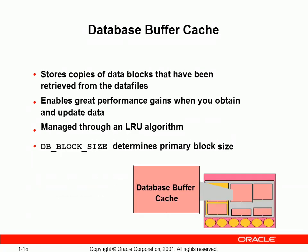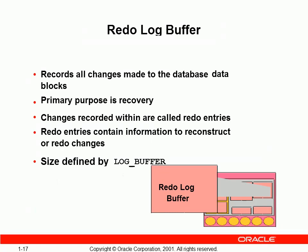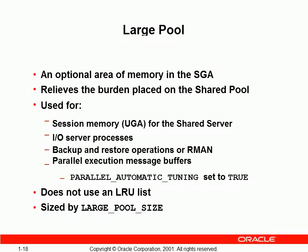The database buffer cache stores retrieved information from the data files. You can change the cache size using the ALTER command for database buffer, keep pool, and recycle pool. The redo log buffer is used to recover changes by storing entries.